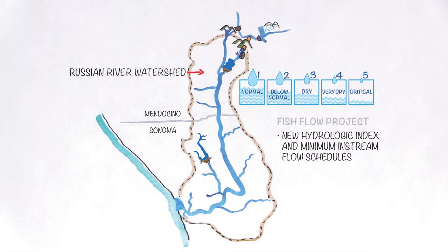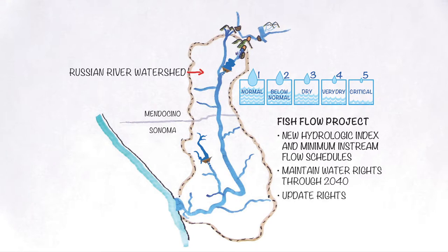Sonoma Water's fish flow project also addresses maintaining its existing water rights through 2040 and updating those rights to reflect current Russian River watershed conditions.